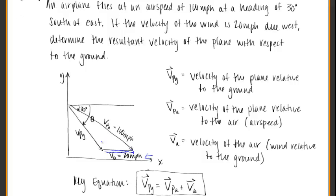We want to determine the resultant velocity of the plane with respect to the ground. So if this plane is coming down kind of south of east and we've got this wind pushing against it, we need to find the resulting vector. I've declared these variables: you have the velocity of the plane relative to the ground, the velocity of the plane relative to the air (VPA), and V of A is the velocity of the air.